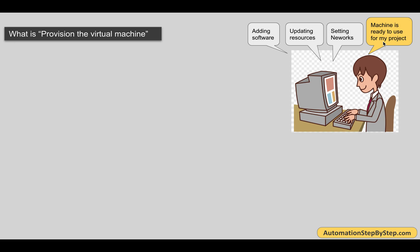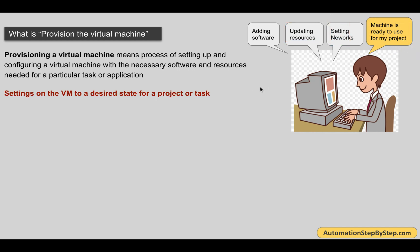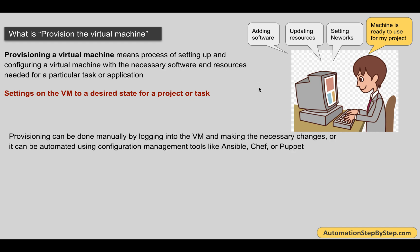Let's get started. First, let us see what we mean by provisioning a virtual machine or provisioning any machine. Provisioning a machine means setting it up and bringing it to a desired state so that it can be used for our project or any task. That can include adding the necessary software, installing applications, updating resources, setting up network connections, etc. In very simple words, setting the VM to a desired state so that it can be used for the project or task.